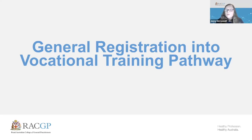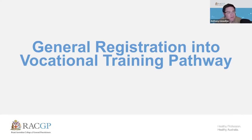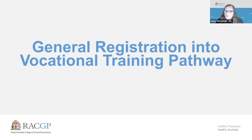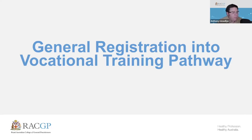The restrictions depend on whether someone is on the moratorium. If an IMG had been working in Australia for 15 years and decided to do AGPT, they could probably choose between general and rural streams. But a relatively recent arrival who was otherwise eligible would probably be looking at the rural stream. A link to information about the pathway and the general practice training program was posted in the chat.